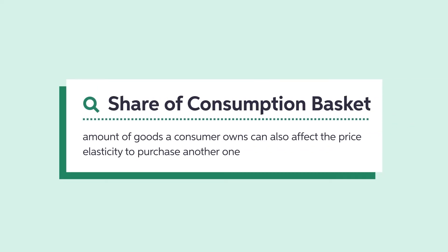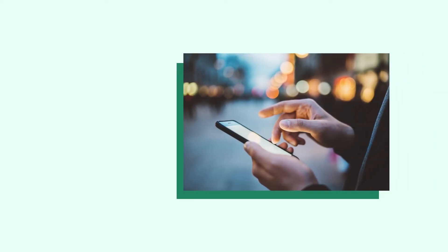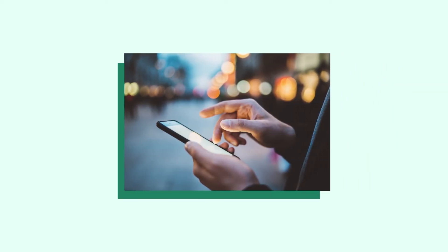The share of consumption basket — the amount of a good a consumer already owns — can also affect the price elasticity to purchase another one. Take a smartphone, for example. For most people, one smartphone is enough to satisfy their daily usage. Therefore, even if the price of a second smartphone was significantly lower than the first, a consumer still may not buy it since their demand is already satisfied with one smartphone.